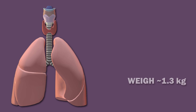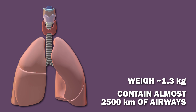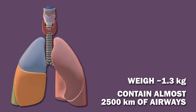The lungs weigh around 1.3 kilograms and contain almost 2,500 kilometers of airways. The right lung is larger and heavier than the left, because the left needs to leave room for the heart. The right lung is subdivided into three lobes, while the left has two.